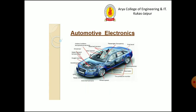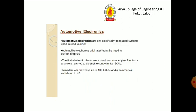This is an Automotive Electronics System. Automotive Electronics are an electrically generated system used in road vehicles. Automotive Electronics originated from the needs to control the engines. The first electronic pieces were used to control the engine functions, and were referred to as an engine control unit.